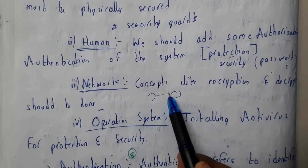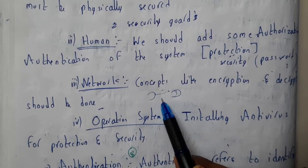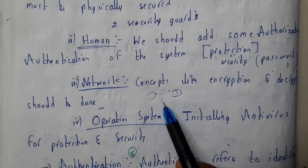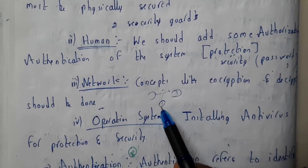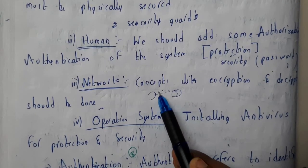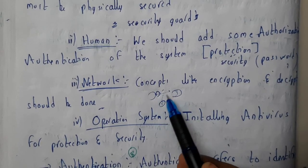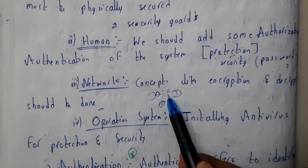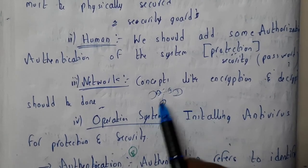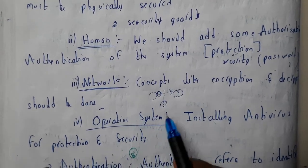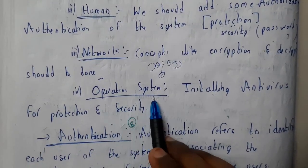The third level is network security. When you send a data packet — a message — to your friend, it should not be readable by a hacker. Before sending, the data should be encrypted, and before your friend reads it, it should be decrypted. This encryption and decryption process is also part of security.